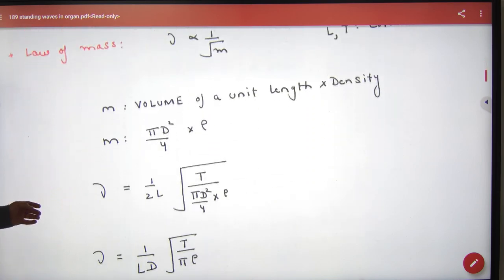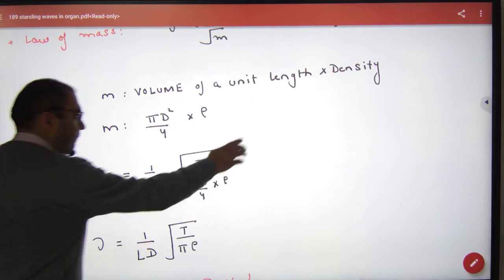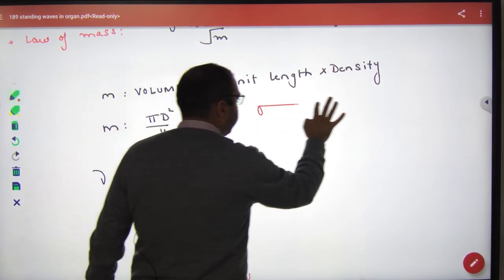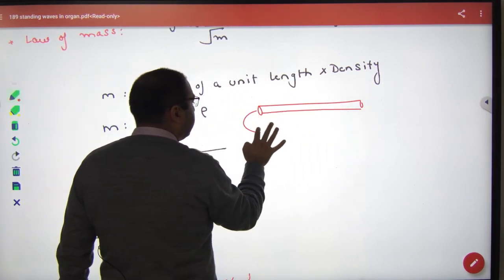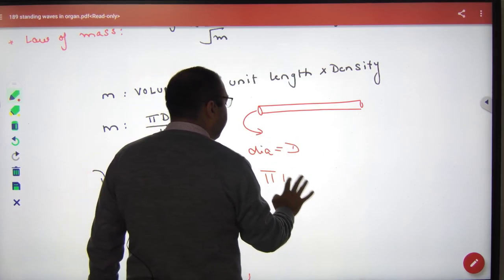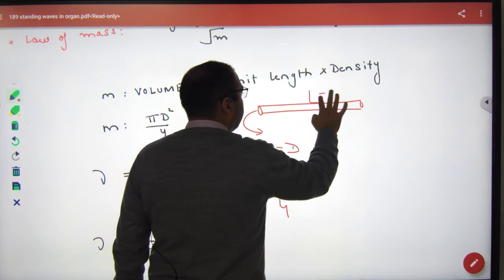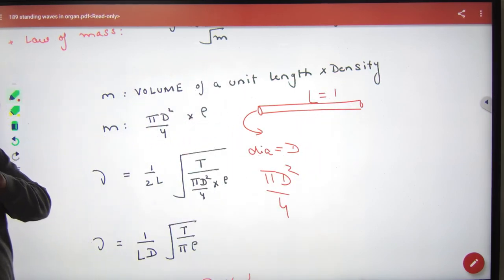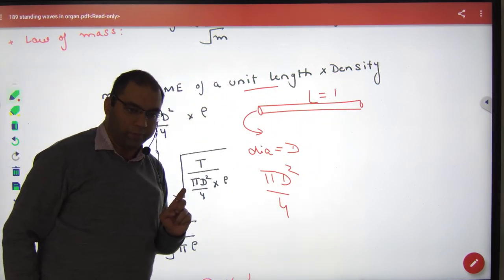Then, the second thing is that if you have a cylindrical wire which is stretched and the diameter is D. What will be the area? Pi D squared by 4. What is the length value? 1. Consider unit length.